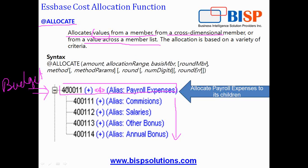I want to allocate this value at the parent level to all the children. Allocation is based on a variety of criteria. We're going to talk about different criteria: spread allocation, linear, and based on percentage.